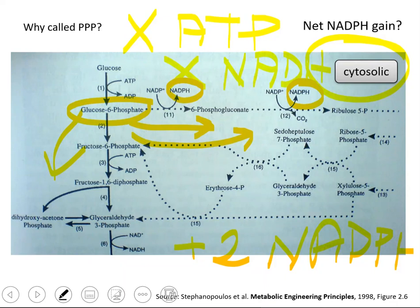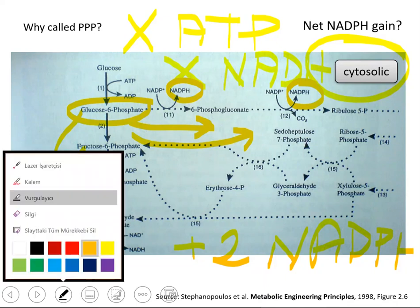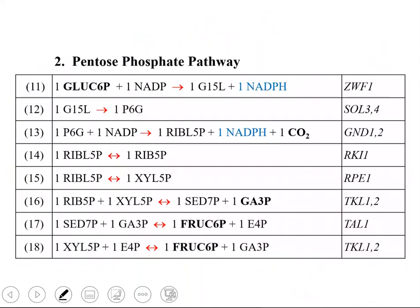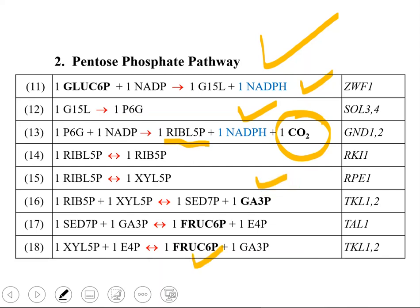In the glycolysis pathway, we had ATP and NADH production — there was no NADPH production. This figure is from the Metabolic Engineering Principles book. If you want to perform simulations based on metabolic networks, we need to list the reactions. The reaction list for the pentose phosphate pathway shows two NADPH productions, a carbon dioxide release leading to five-carbon metabolites, and at the end the reactions produce glyceraldehyde-3-phosphate and fructose-6-phosphate, which are metabolites in the glycolysis pathway. Associated genes from yeast Saccharomyces cerevisiae are also shown.